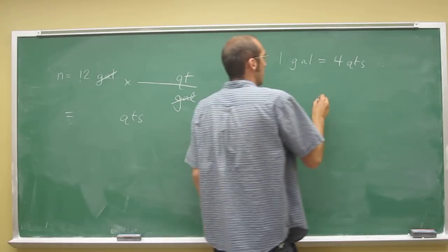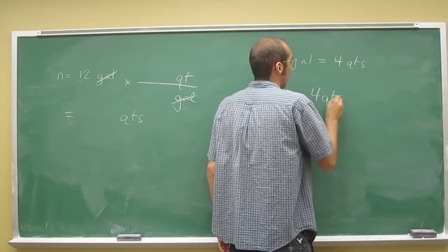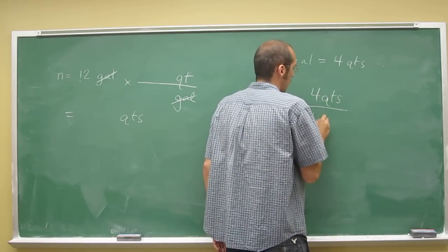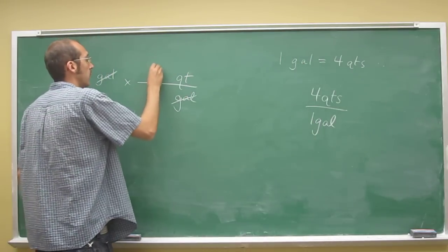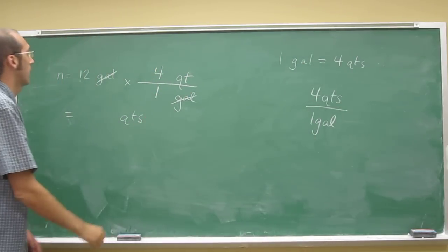We want this to be a conversion vector, so 4 quarts over 1 gallon, or 4 quarts equals 1 gallon. So we go like that.